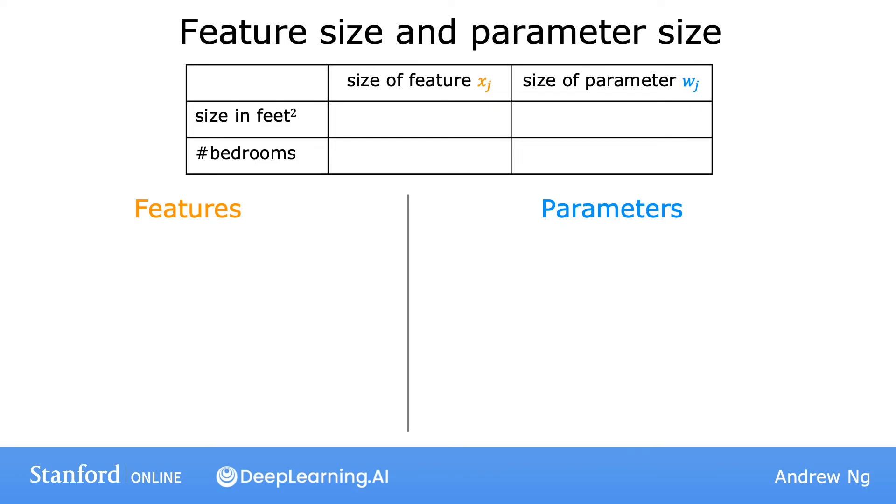So how does this relate to gradient descent? Let's take a look at a scatter plot of the features, where the size in square feet is the horizontal axis, x1, and the number of bedrooms, x2, is on the vertical axis. If you plot the training data, you notice that the horizontal axis is on a much larger scale, or much larger range of values, compared to the vertical axis.